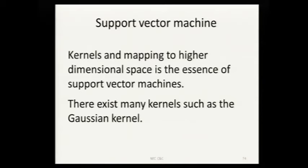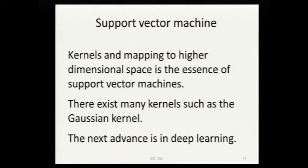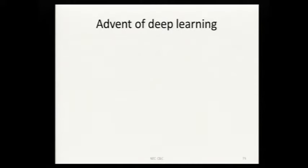There are many kernels like this. This is the basis of what's called a support vector machine. The support vector machine is what was driving AI for the last 15 to 20 years, and it was very successful. But the thing that accelerated the area of AI is deep learning.